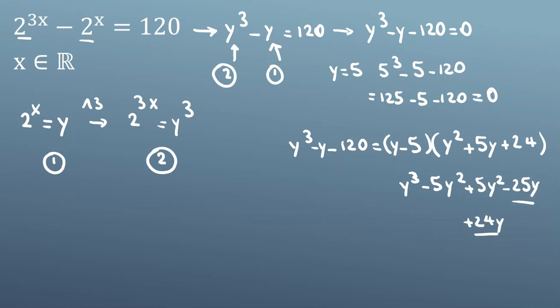This gives -y like on the left side, and 24 times -5 gives -120, which matches.